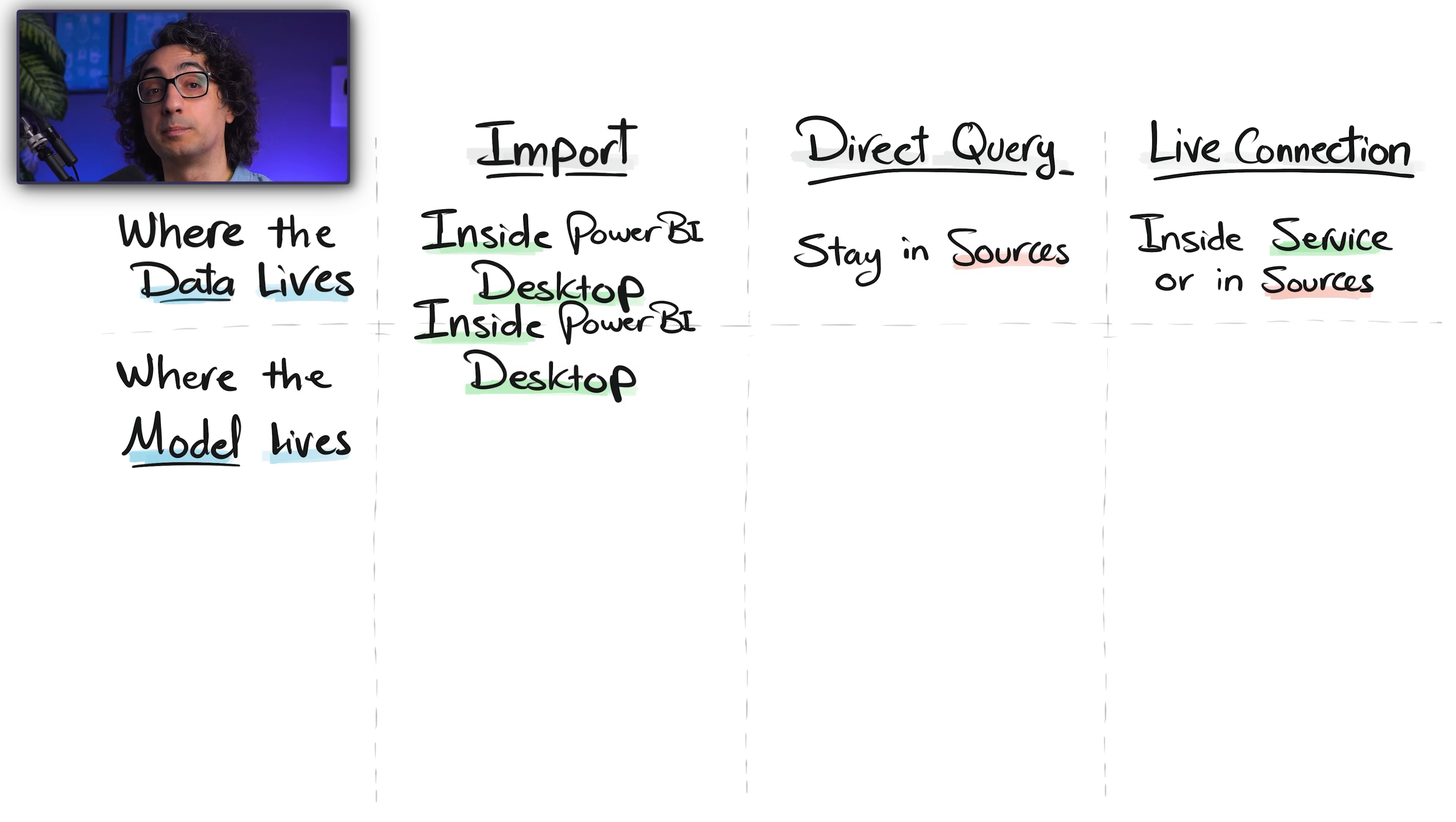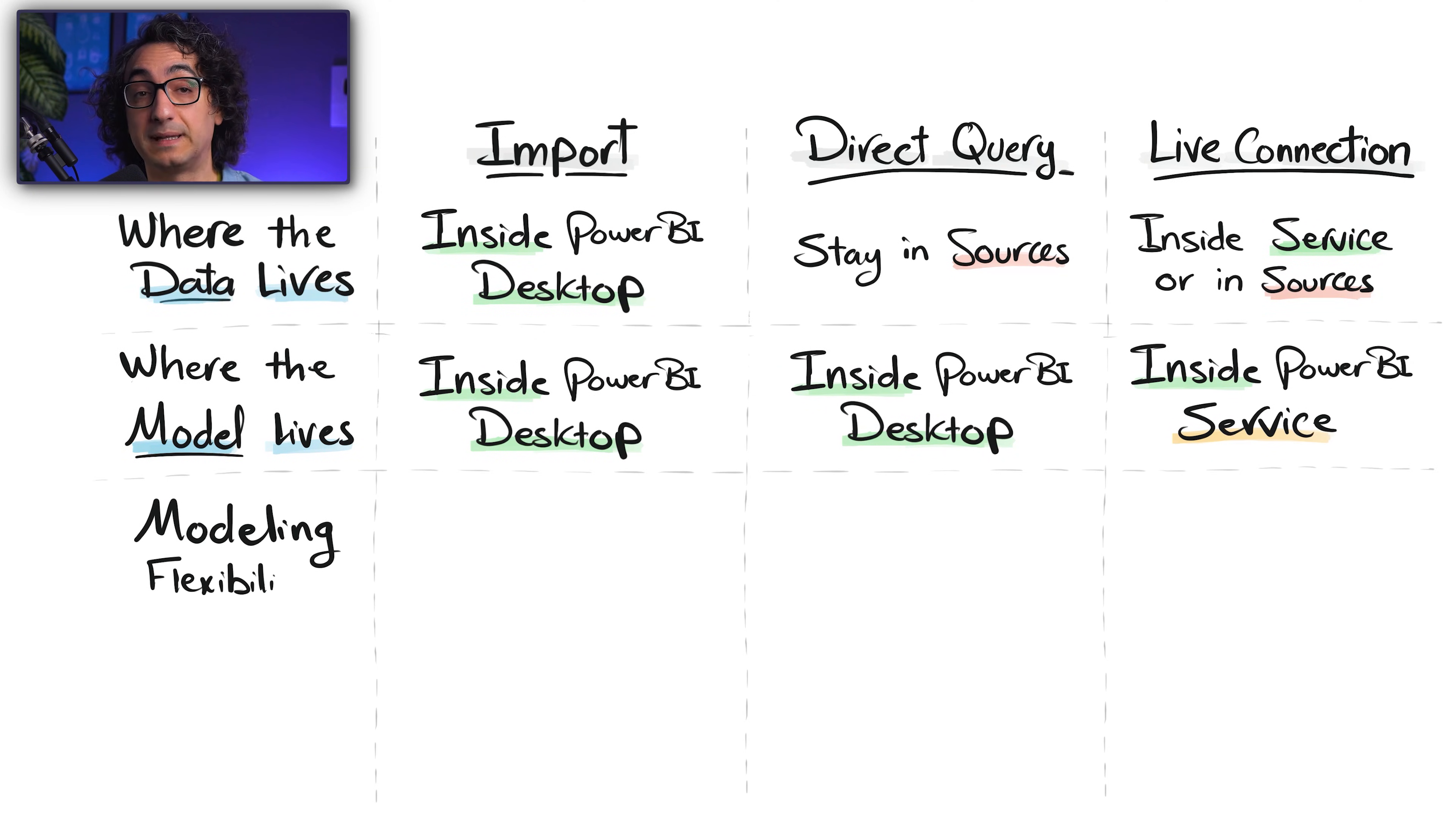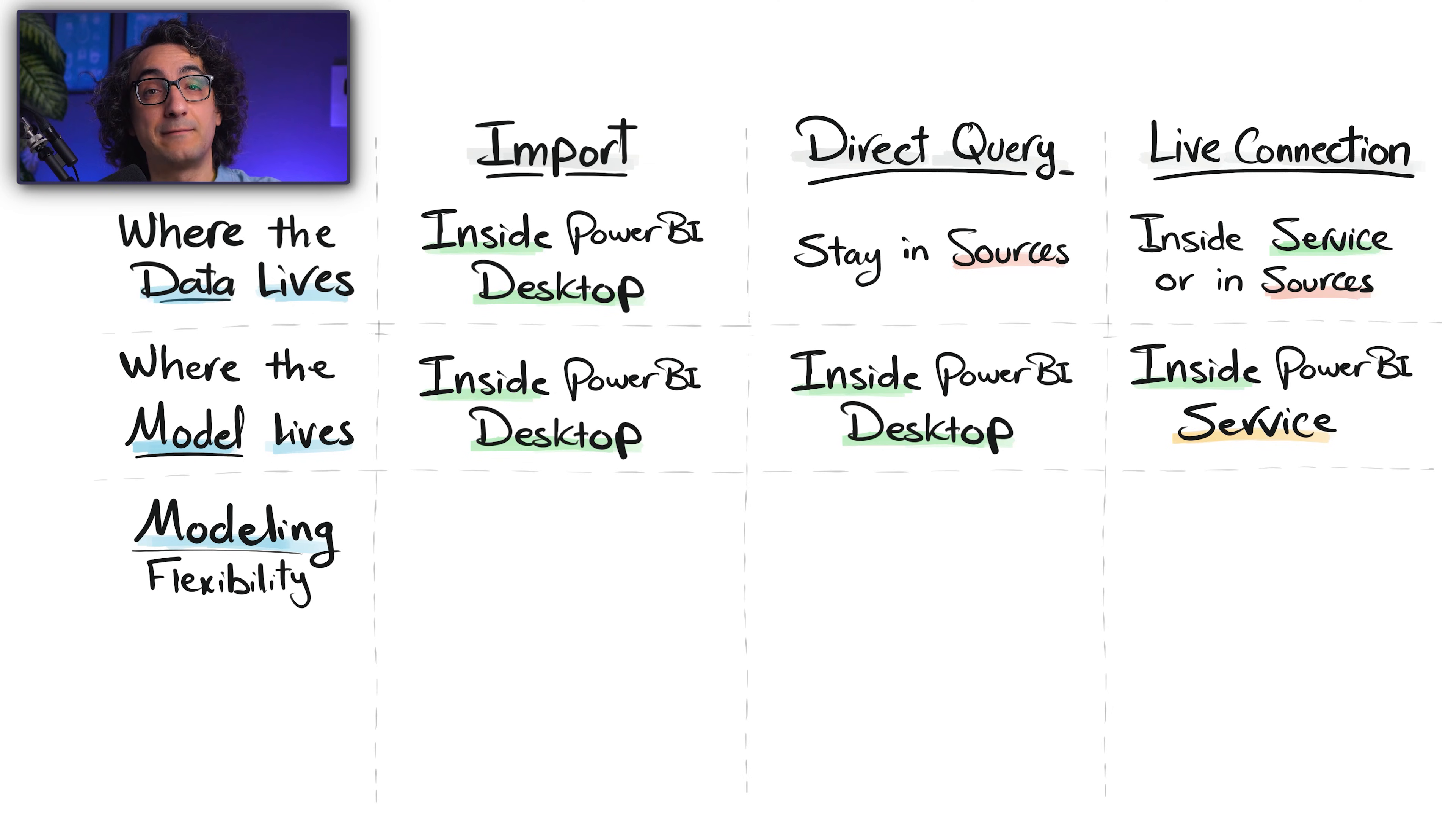Next, where the data model lives. With Import and Direct Query, the model lives inside your Power BI Desktop file. But with Live Connection, the model lives in the Power BI service, so outside of your desktop file. Now, about the modeling flexibility - with Import, you have full freedom.